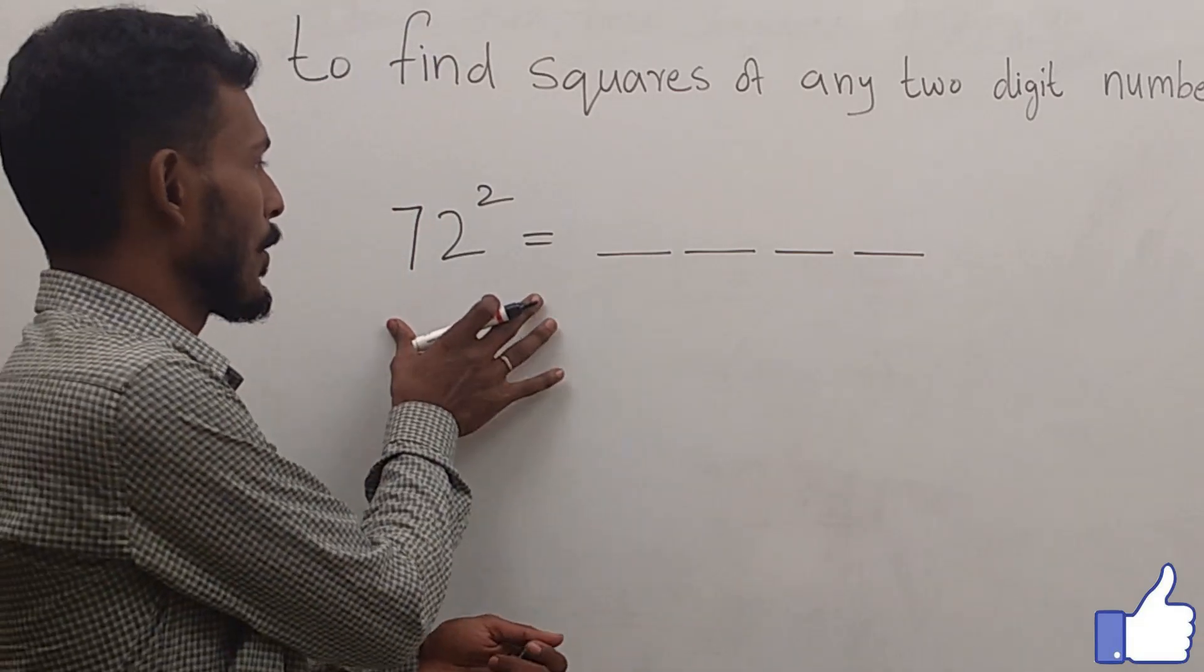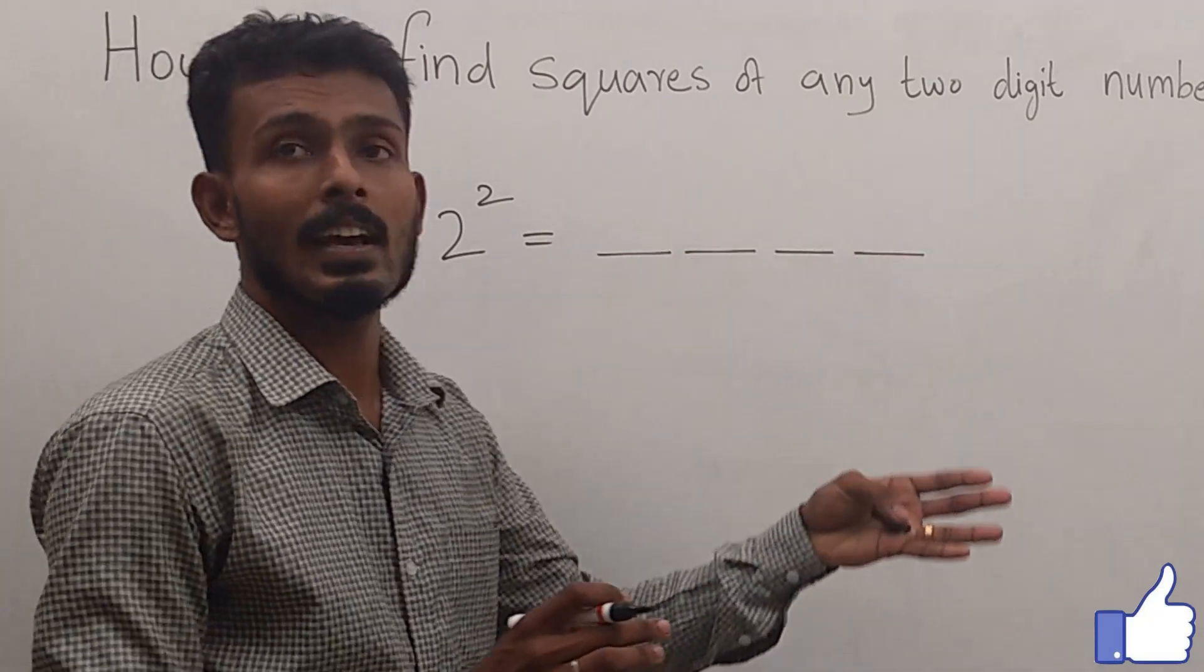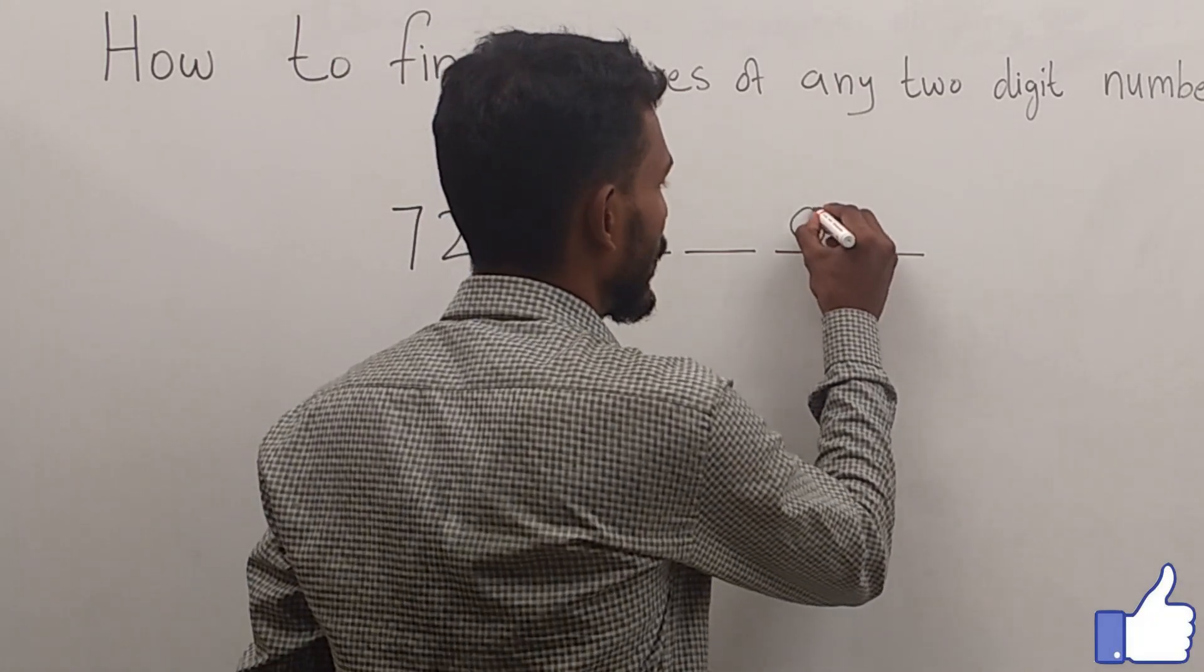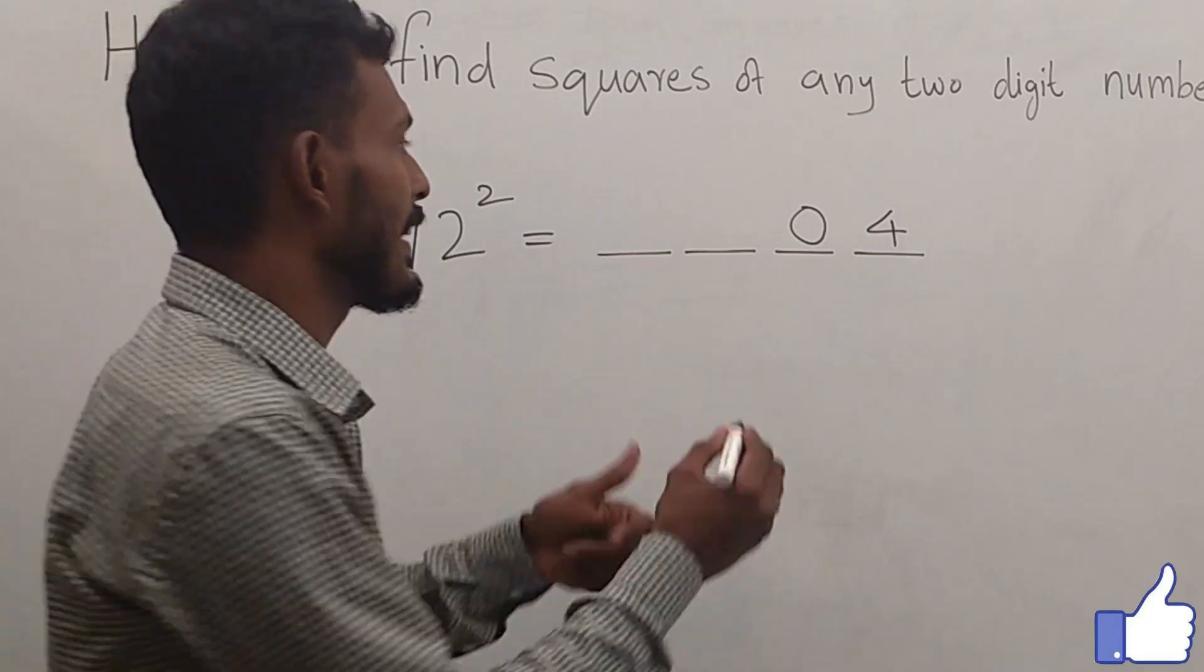What do we do now? 2 square root value of 4 is written. If we do 2, we can do 0 of 4. 7 square root value is 49.